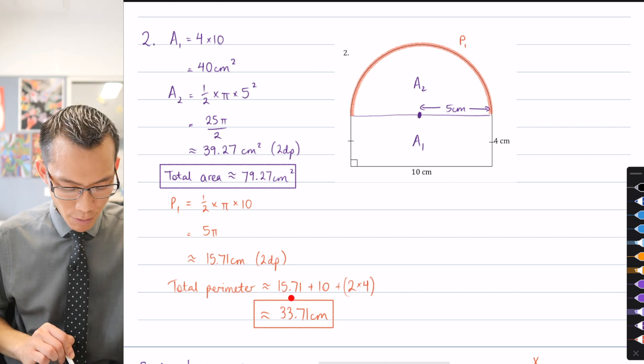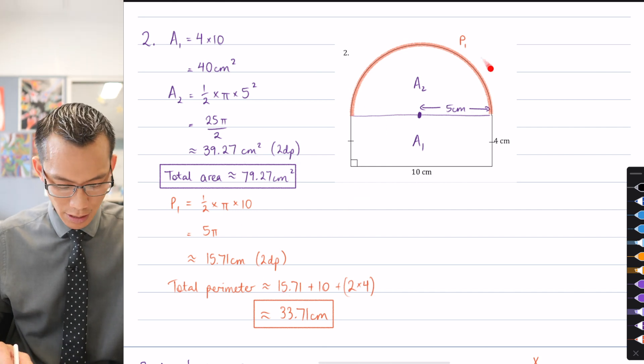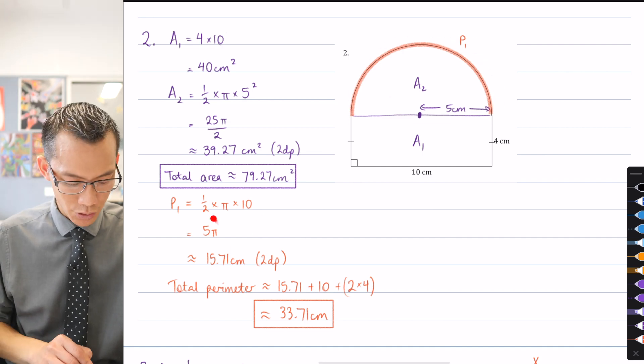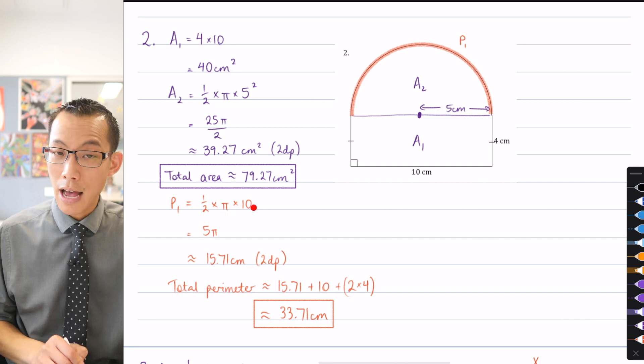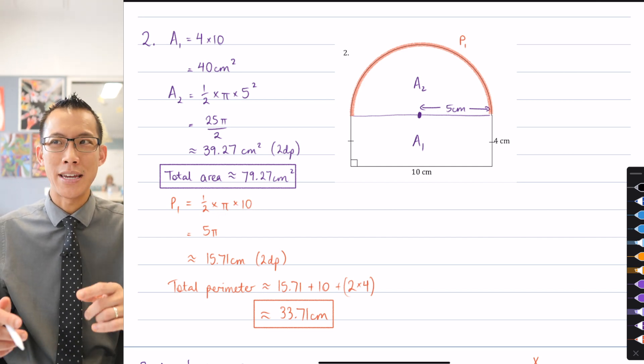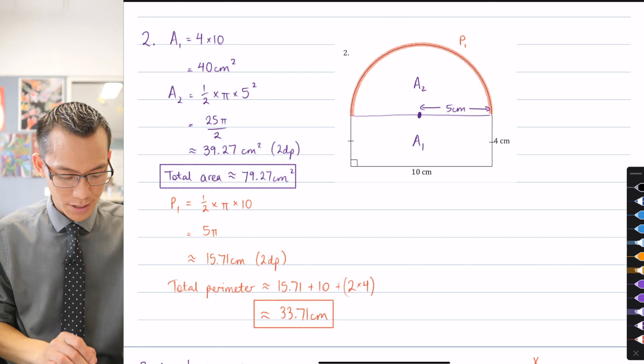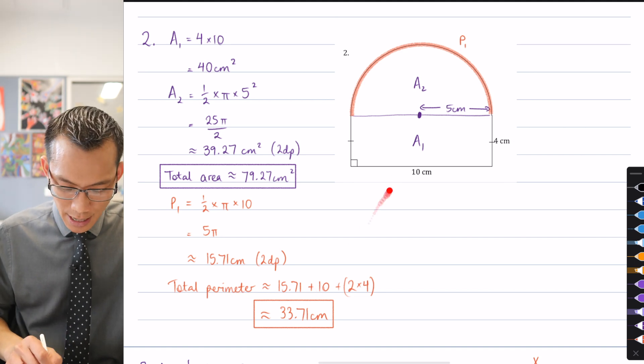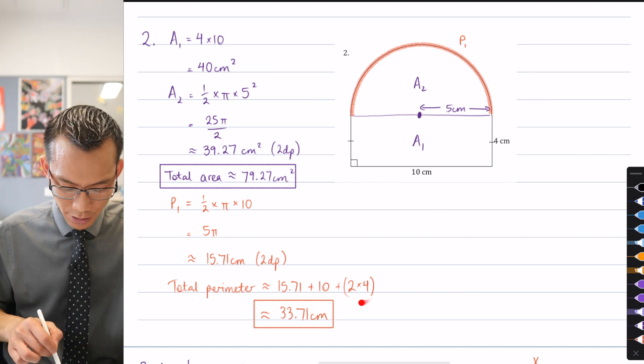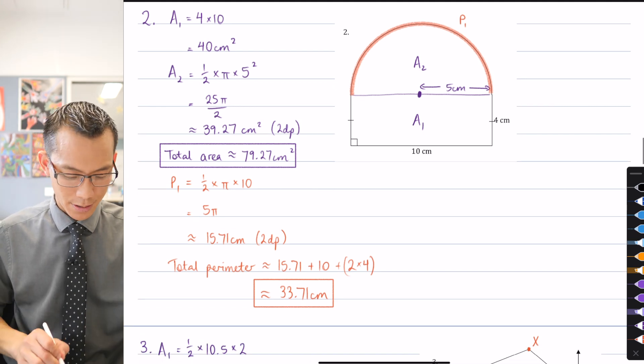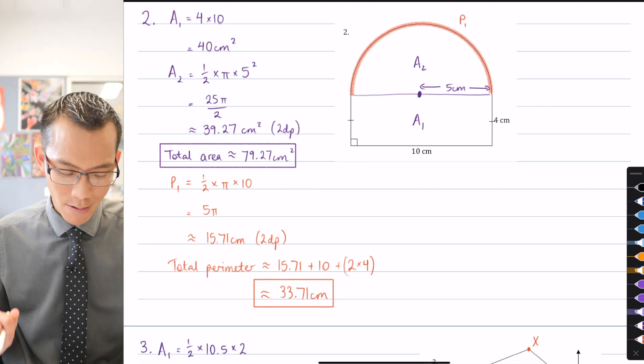And then when working the perimeter, the only tricky part here is that half of the circumference. So I'm using half times pi times the diameter. That's actually the definition of pi. It's the ratio between the diameter and the circumference. And I did half because it's a semicircle. After that, you can see I've got this 10 down here. And the 2 times 4 comes from those two vertical edges over there. And 33.71 is where I ended up.